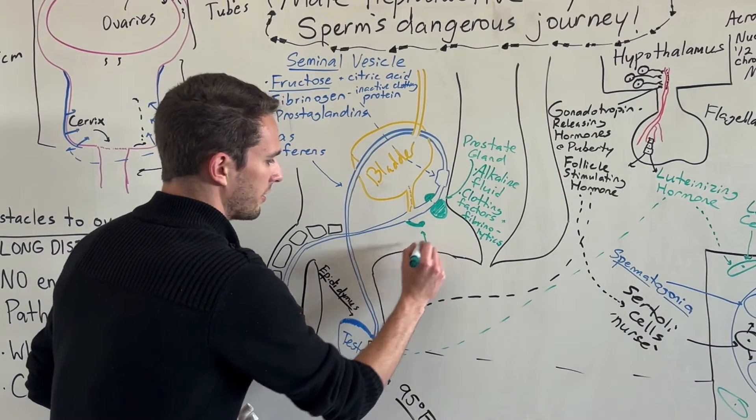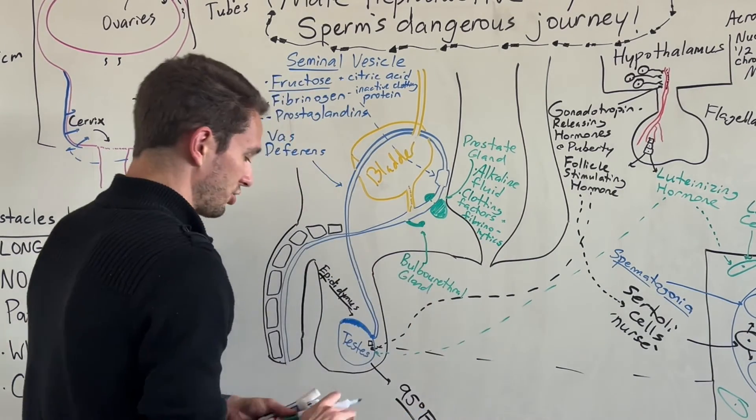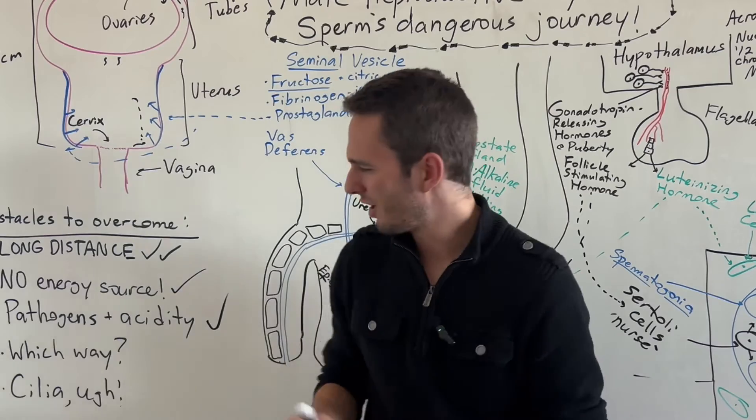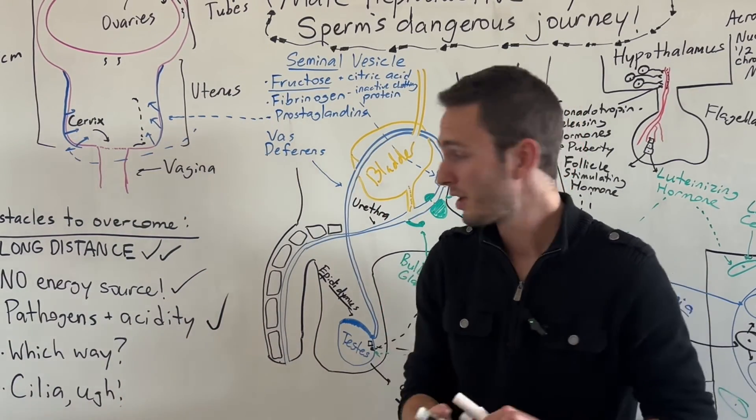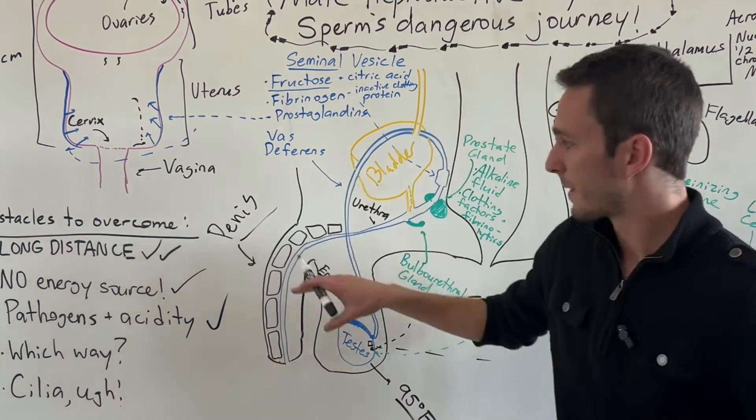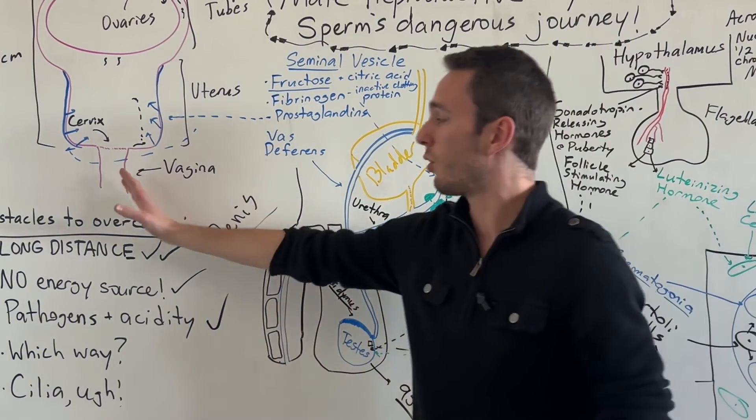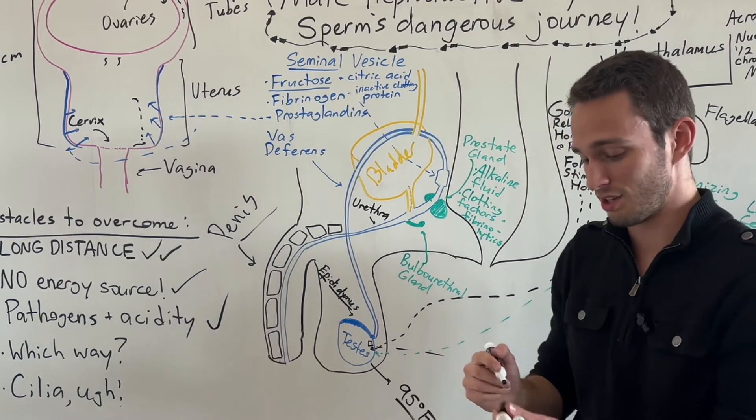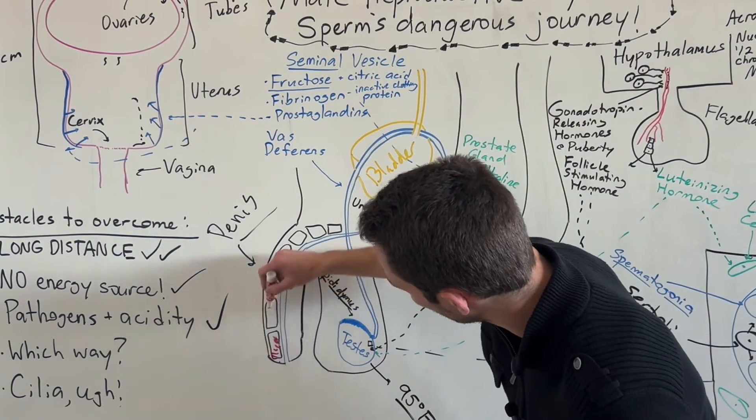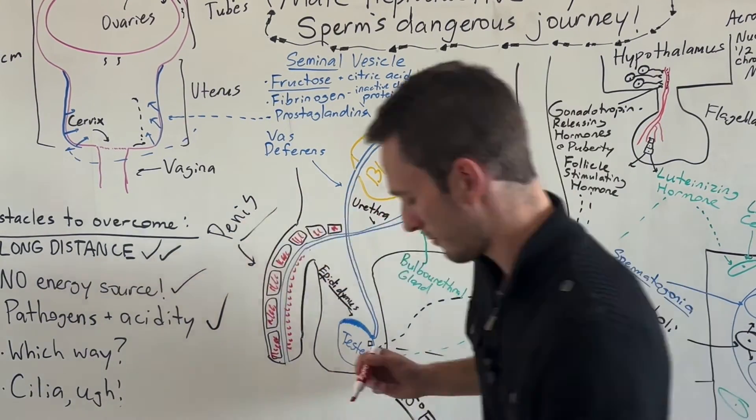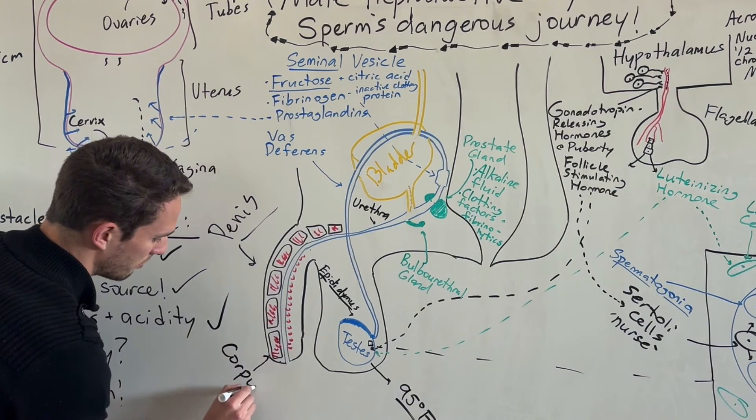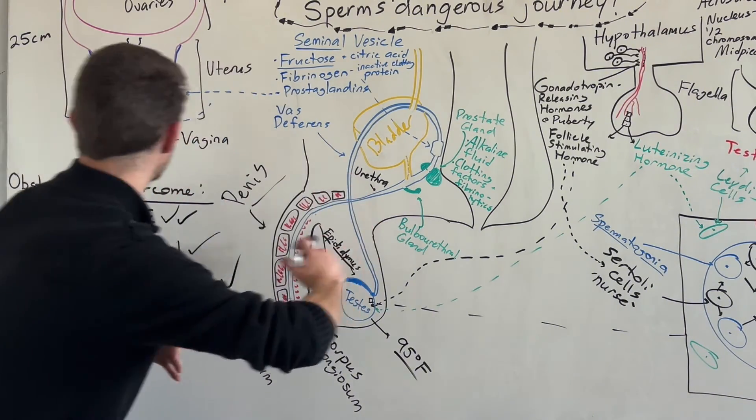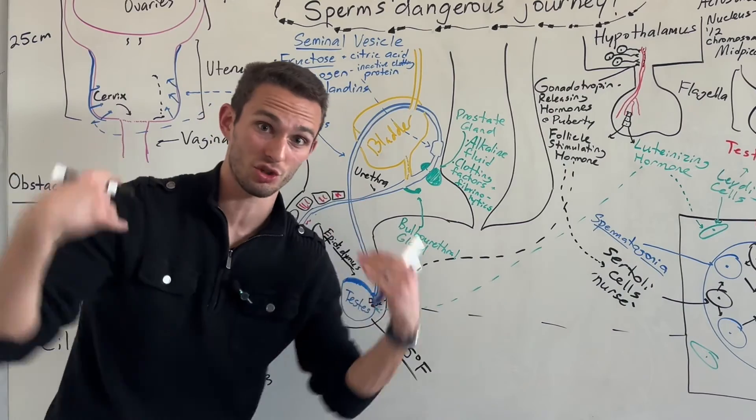The next thing that the prostate will make is clotting factors and fibrinolytics. The clotting factors will help activate the fibrinogen that came from the seminal vesicle, which will help clot the sperm up. Then after the sperm has been deposited in the female reproductive tract, the fibrinolytics, which literally means fibrin breaking, will release that clot of sperm and allow them to freely swim. This is important to clot the sperm during ejaculation because as they travel through, some of the peripheral sperm might get killed off by the pathogens, but that'll keep the interior alive, like a band of brothers helping each other out.